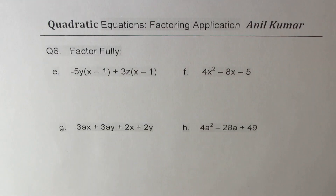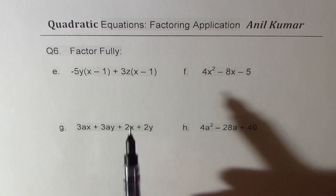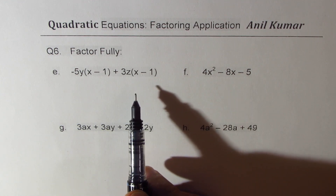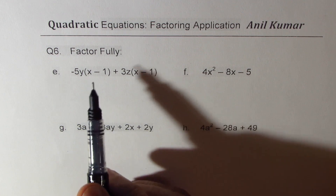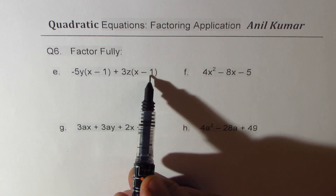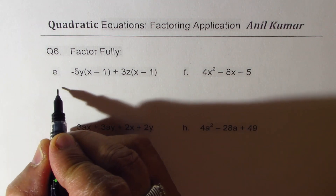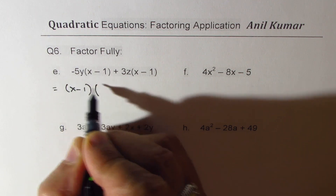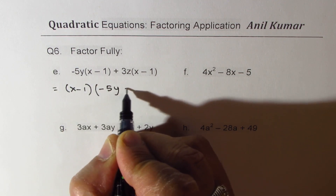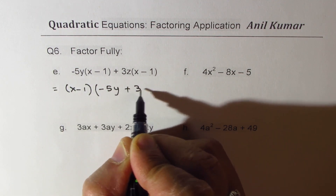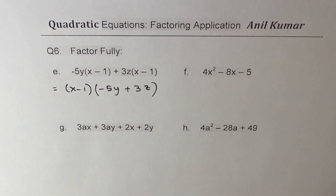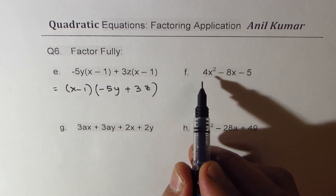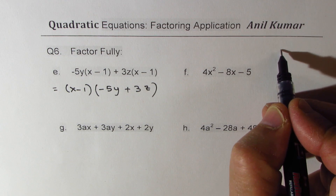Let's move on to the last question. I hope it was not very difficult. Here we have a slightly different kind of expression. (x - 1) is a common factor, so we take (x - 1) out and we are left with (-5y + 3c).